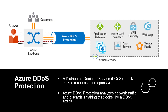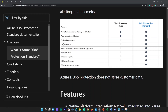Azure DDoS protection uses the scale and elasticity of Microsoft's global network to bring DDoS mitigation capability to every Azure region. During a DDoS attack, as you scale your computing needs to meet demand, DDoS protection can manage your cloud consumption by ensuring that your network load only reflects actual customer usage.